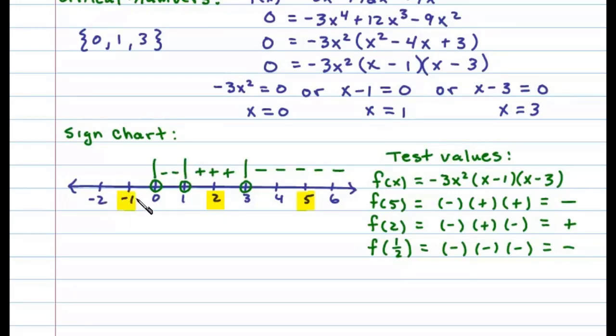Finally, choosing a number in this last region, say -1. Substituting in -1, we have -3 times (-1)² leaves us with a negative factor. -1 - 1 is negative, -1 - 3 is negative. Again, multiplying 3 negative factors will result in a negative number. Once we complete the sign chart, we can next use it to answer the question.